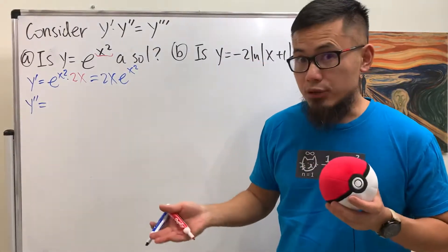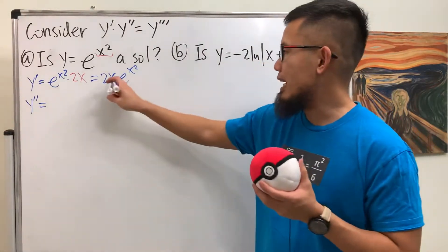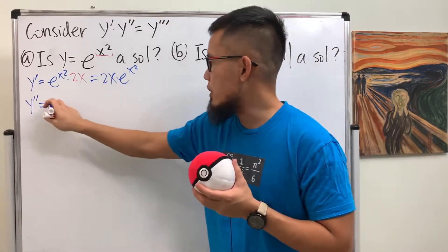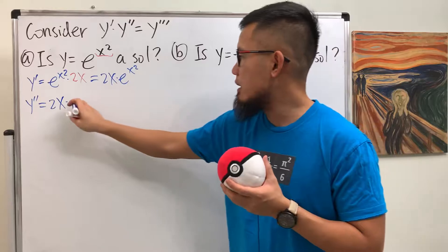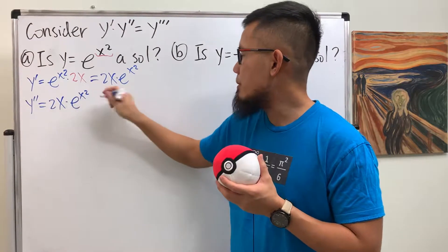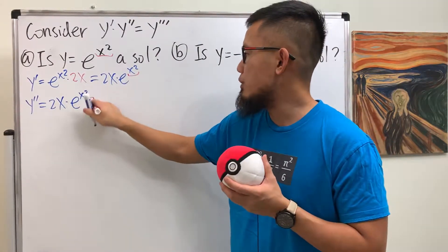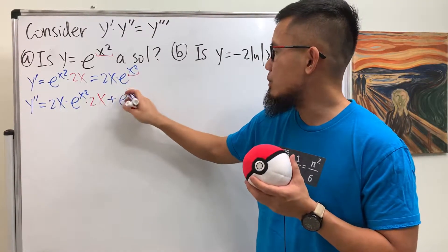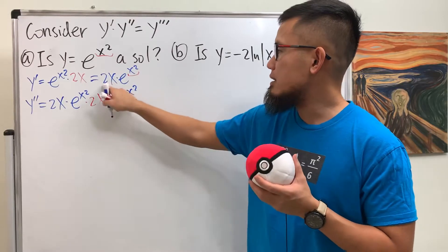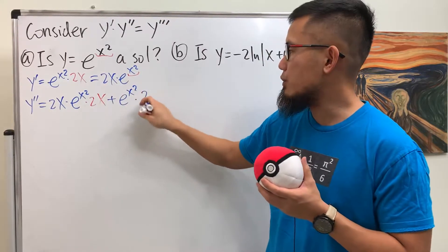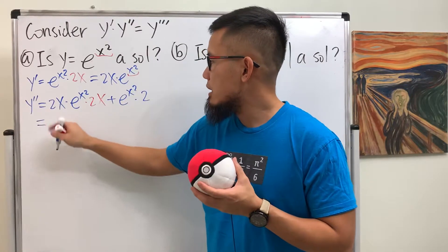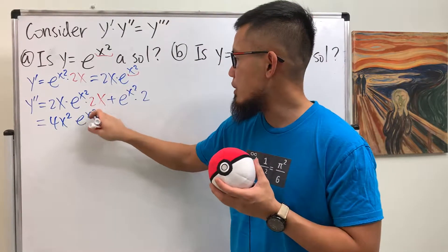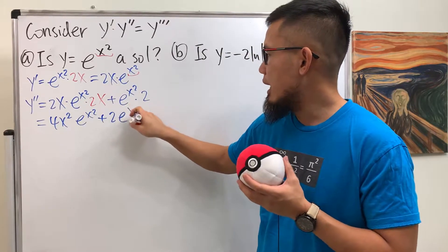For y double prime we have to use the product rule because we have 2x times e to the x squared. Keep the first function 2x, multiply by the derivative of the second: e to the x squared times 2x by the chain rule, then add the second function e to the x squared times the derivative of the first which is 2. So y double prime equals 4x squared · e to the x squared plus 2 · e to the x squared.